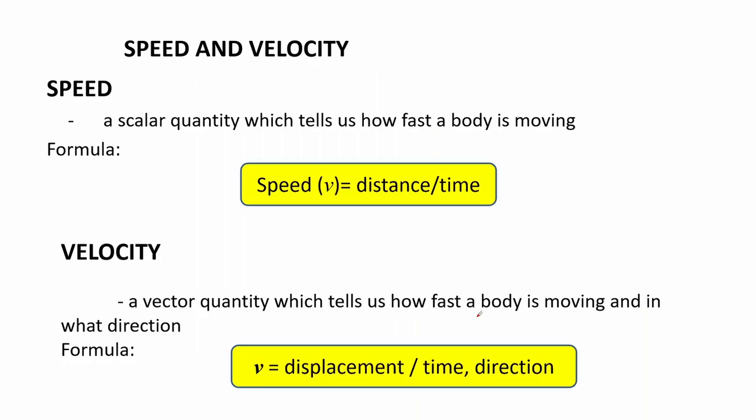The third one is the concept about speed and velocity. Speed tells us how fast a body is moving, given the formula distance over time. As you can see it is using distance, which is a scalar quantity, just like speed. Velocity on the other hand is a vector quantity of speed. Instead of distance it uses displacement and the addition of direction.